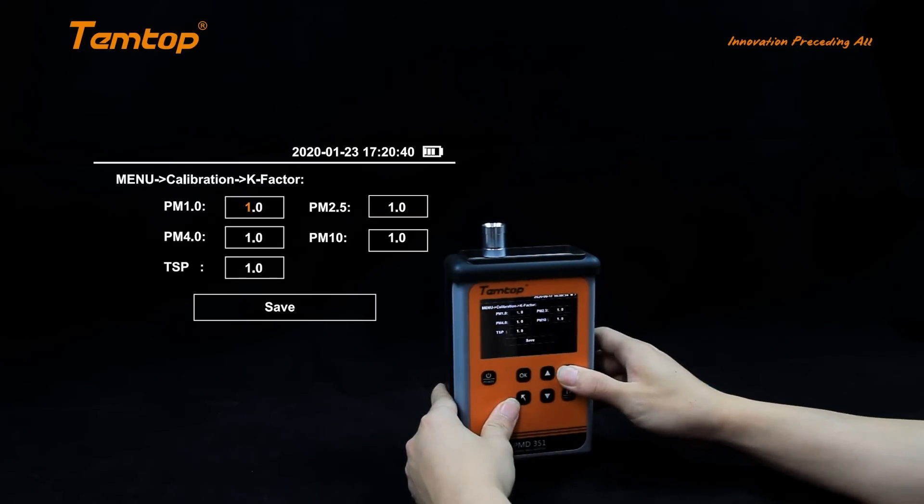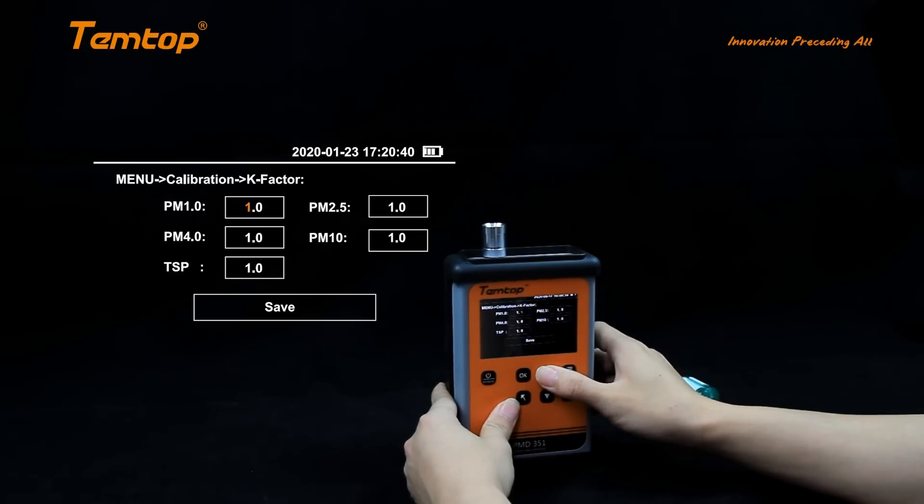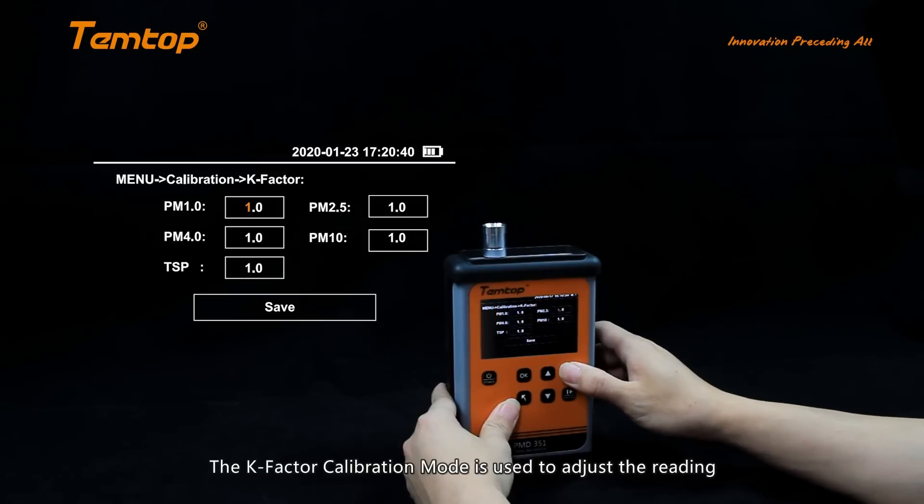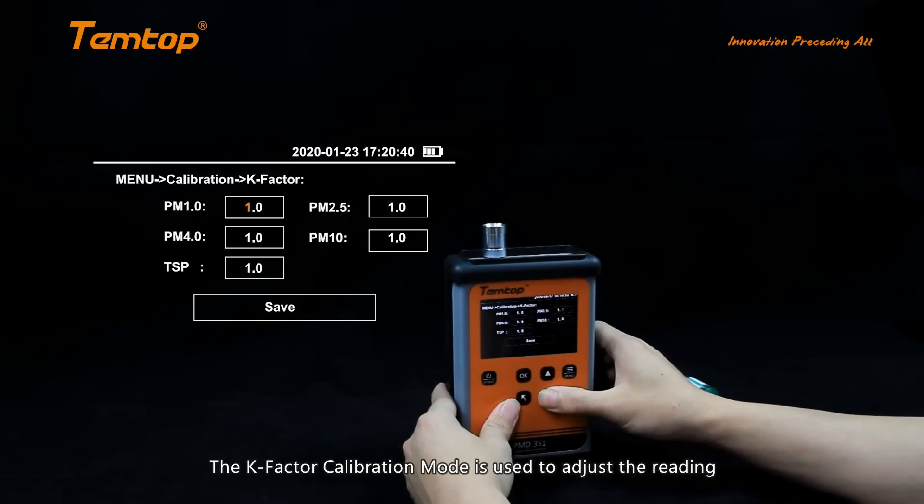K-Factor Calibration. The K-Factor Calibration mode is used to adjust the reading by changing the coefficient, which ranges from 0.1 to 9.9.